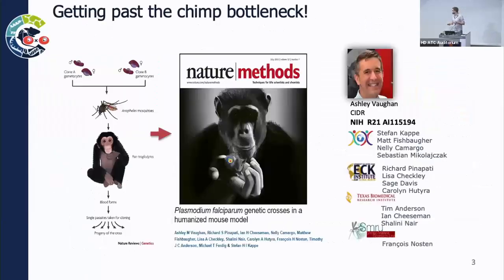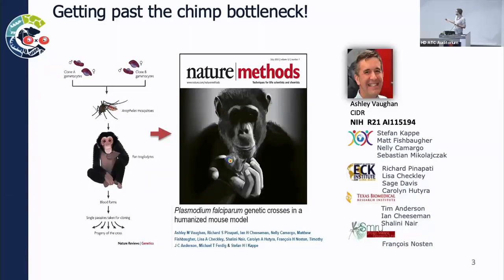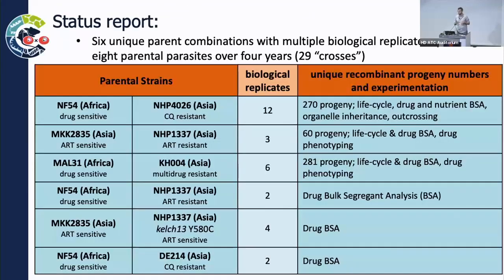About six or seven years ago, we published a paper that essentially got around a lot of these logistical and ethical issues by replacing the chimpanzee part of this process with humanized mice. This is the team that contributed towards that work. We subsequently used this to get some large programmatic funding to do this at a really big scale, enabling us to go after crosses in a big way.